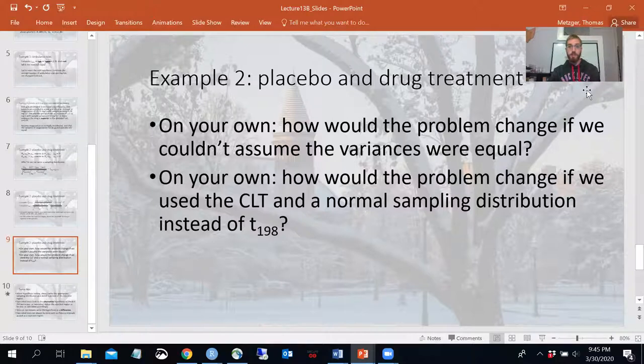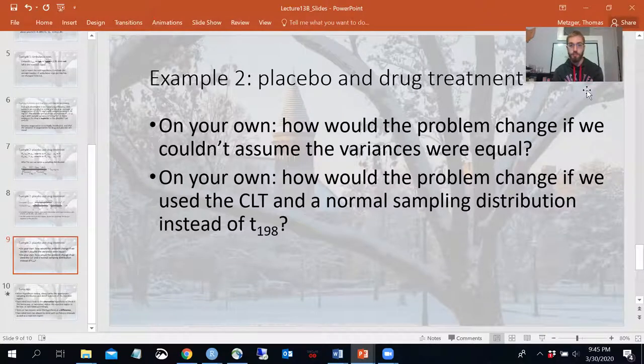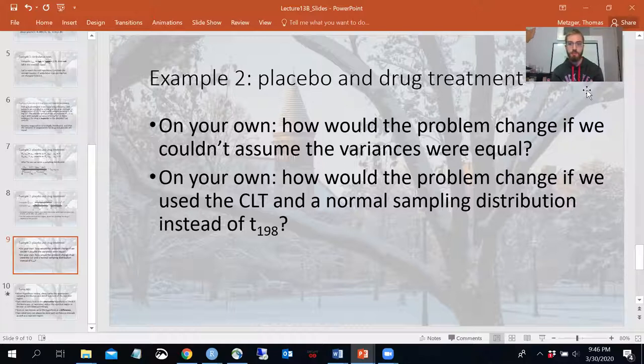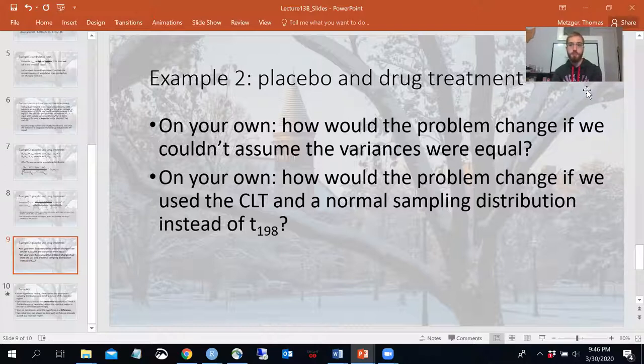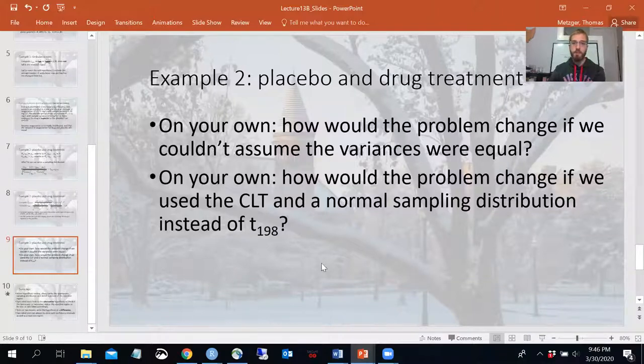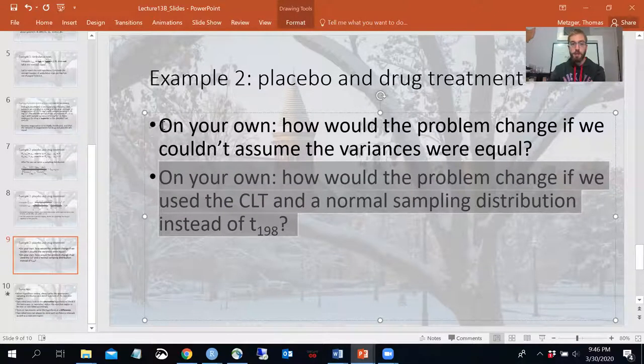So a couple of suggestions to try on your own. Number one, how would the problem change if we couldn't assume the variances are equal? Remember, what did we do in that context? Rather than use the pooled variance, we used the two S squareds. So I would have to tell you what the S squareds were, which I did for this problem. And the only thing that would change then would be the degrees of freedom that we used. Remember, that was where that Satterthwaite equation came in. And it was kind of an ugly equation to compute, but you would plug in all those numbers to figure out how many degrees of freedom you'd use. How else would this change if instead of the T198, we used the standard normal? Keep in mind, as you collect more data, the sampling distribution of X bar is going to get more normal. So a T198, that's a lot of degrees of freedom to have. It's not going to be very different from a normal 01. So the problem's not going to change very much if you do that part. But it's good to know how to do both of these.